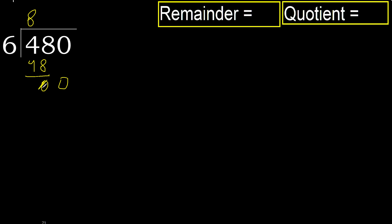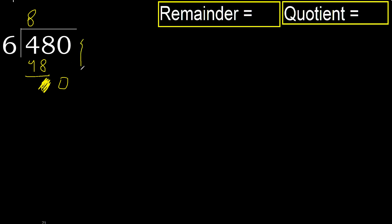Eliminate 0 on this side. 0 — but 0 is less, therefore next. There is no number, therefore finish it. Complete — always complete with 0, because here we finish with this number.